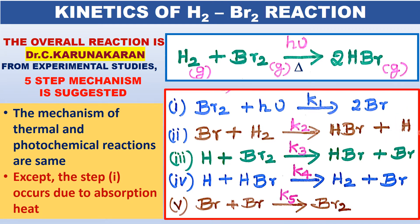So it reacts immediately. It reacts with Br₂, another reactant, to give HBr plus Br. HBr and this hydrogen atom is so reactive that it reacts with HBr. The bond between H and Br in HBr is weak.